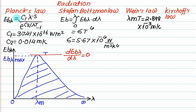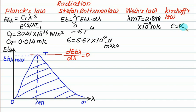So, Planck's law gives the spectral distribution, Stefan-Boltzmann's law gives the area under that diagram which is the total emissive power, and Wien's law gives the condition for maximum emissive power — that is Eb_lambda_max — using the condition lambda_m times T equals 2.898 times 10 to the power minus 3. Kirchhoff's law says that emissivity equals absorptivity. So these are the four laws used in radiation.